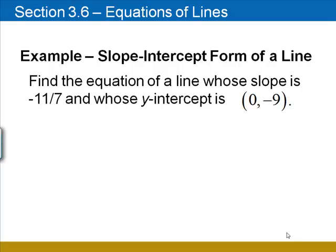Find the equation of a line whose slope is negative 11 sevenths and whose y-intercept is (0, negative 9).